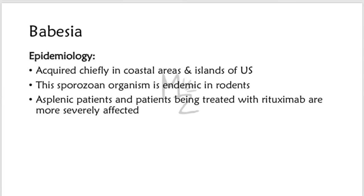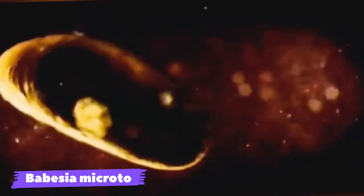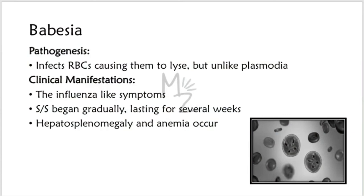Epidemiology: Babesia microti causes babesiosis, a zoonotic infection acquired chiefly in coastal areas and islands of the northeastern coast of the United States. The sporozoite organism is endemic in rodents. Asplenic patients and patients being treated with rituximab are affected more severely. Pathogenesis: Babesia infects red blood cells causing them to lyse, but unlike plasmodia, it has no exoerythrocytic phase. Clinical manifestations include influenza-like symptoms that begin gradually and may last for several weeks, along with hepatosplenomegaly and anemia.